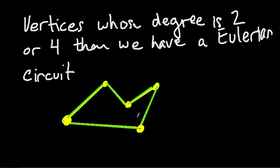And what do you notice? Well, the degree of every vertice in this graph is 2. So since the degree of every vertice in this graph is 2, we have a circuit.